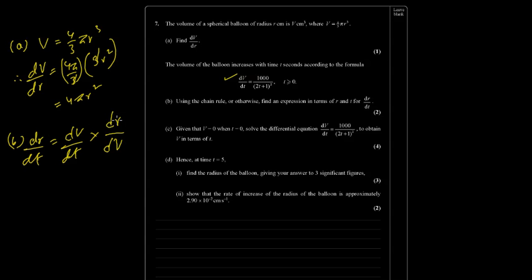So dr by dv, the derivative. Look at the previous sum, what you did. It's the same. So dv by dt is 1,000 divided by 2t plus 1 whole squared multiplied by dr by dv. Now, we found dv by dr in the previous sum, so this is the reciprocal. So this would be 1 by 4 pi r squared. Done.